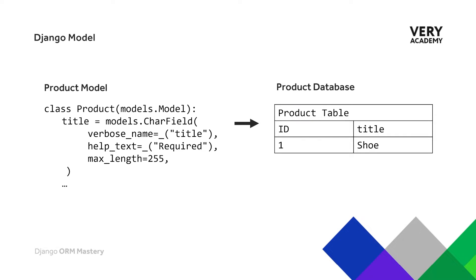A quick recap: a Django model is a single definitive source of information about our data. If you have been following this course, you are most probably already familiar with the Django model. We have learned that it contains the essential fields and behaviors of the data we intend to store, and that the model maps to a single database table. Each model is a Python class that subclasses Django DB models.model, and each attribute of the model represents a database field.